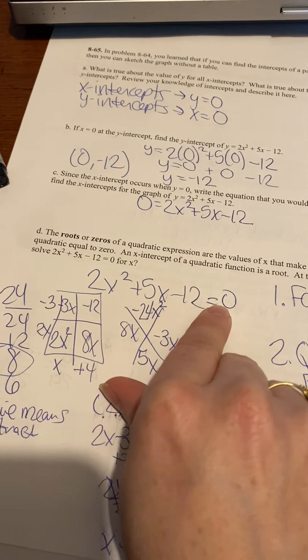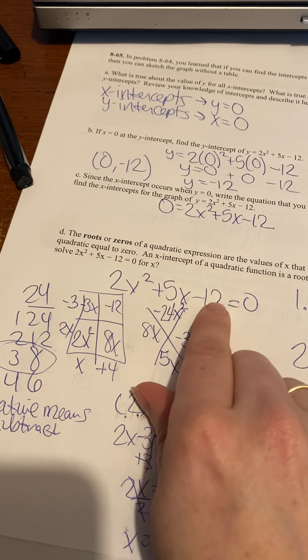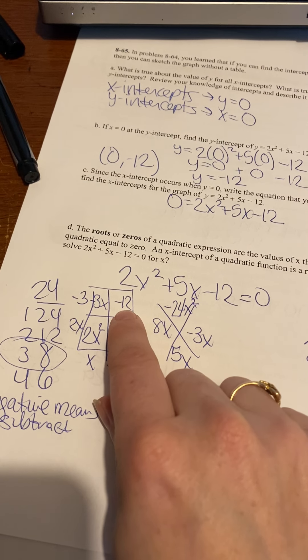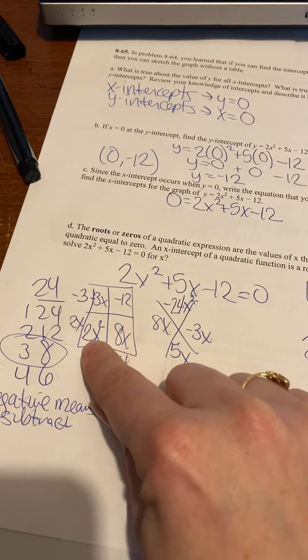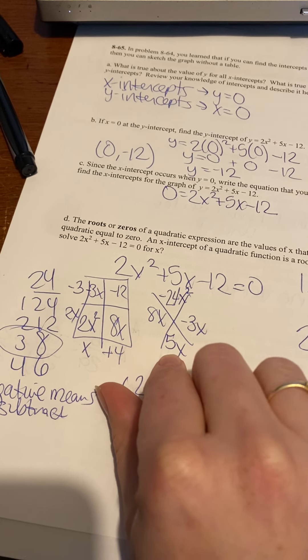So, 2x squared plus 5x minus 12 equals 0. First, do they have a common factor, 2, 5, and 12? Nope. So you'll bring down your 2x squared, your minus 12 here. So you're going to be looking for two things that multiply to be negative 24x squared that will add to be 5x.